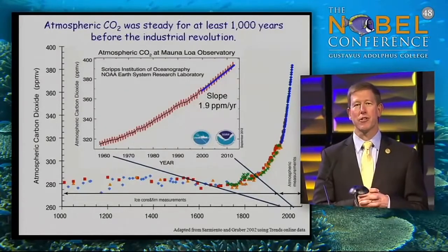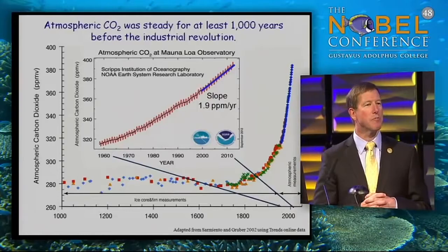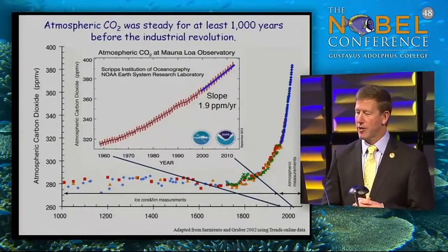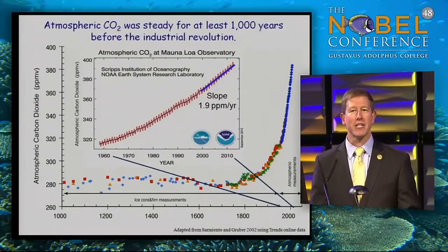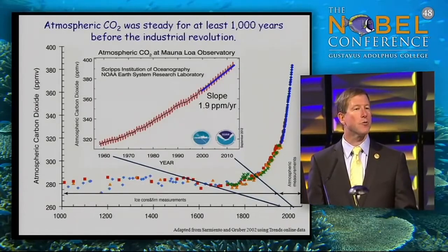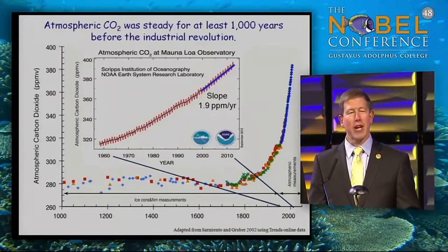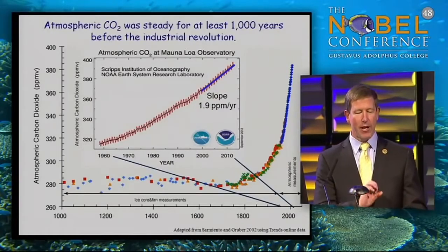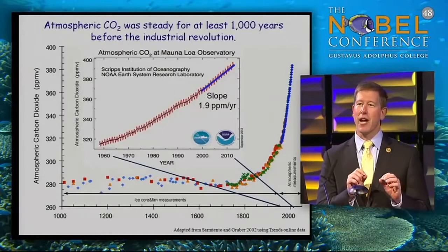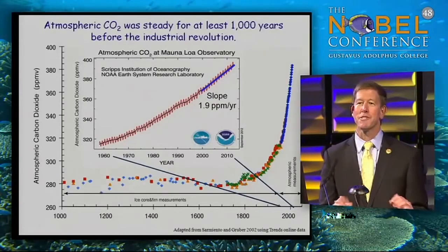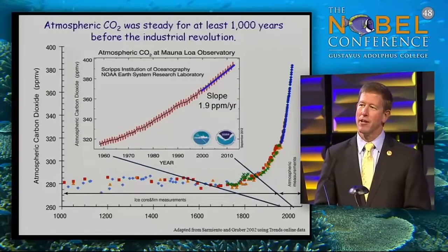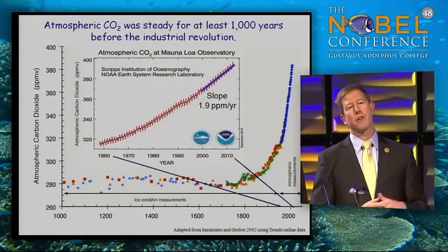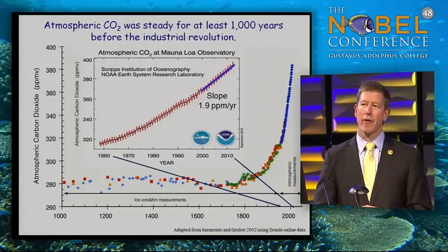In the pre-industrial period, around 280 out of a million molecules would be carbon dioxide. For a thousand years before the Industrial Revolution, which was around 1800, CO2 concentrations were extremely constant. These measurements come from ice cores where ancient atmosphere is trapped in bubbles, and they can measure the CO2 in those bubbles. These records go back almost a million years, and CO2 has never been higher than about 290 parts per million throughout that whole record.